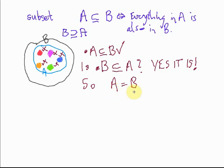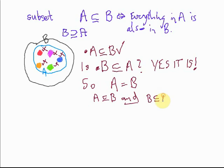We can also say: if A equals B, then everything in A is in B and everything in B is in A. So if A and B are the same sets, we can say that A is a subset of B and B is a subset of A. Simple enough — if they're the same set, everything in A is in B, making A a subset of B, and everything in B is in A, making B a subset of A.